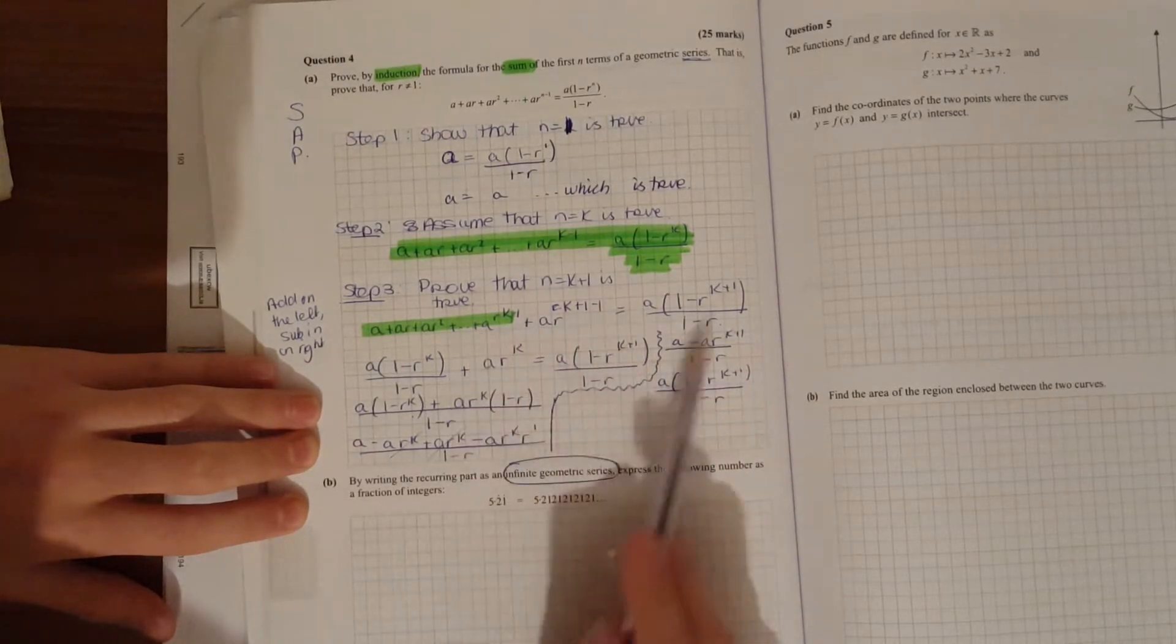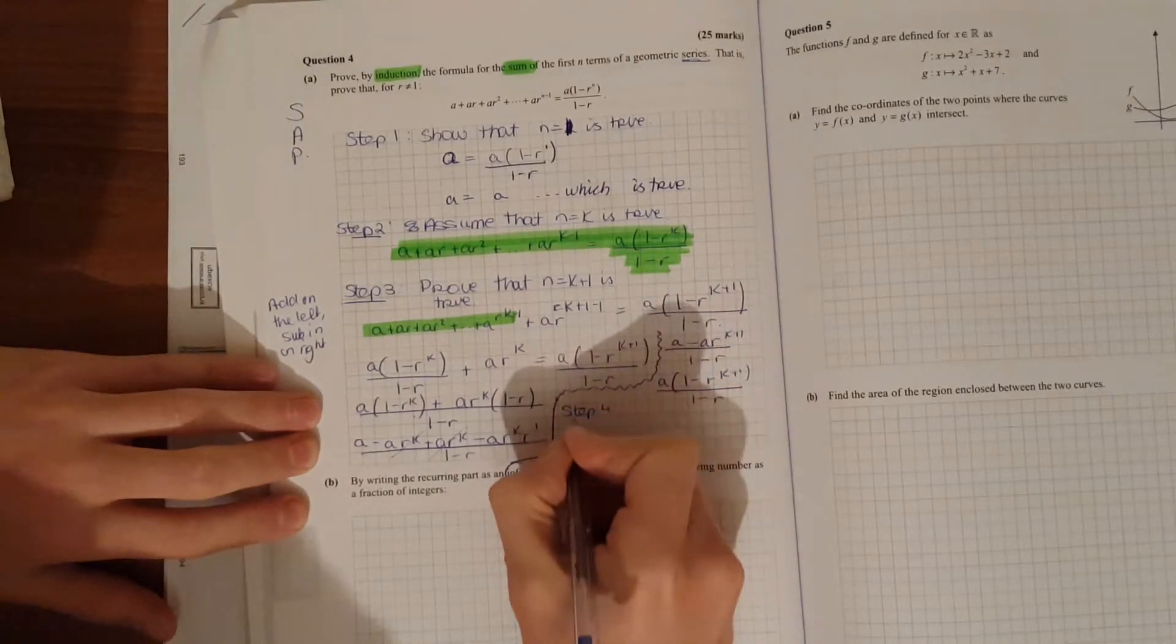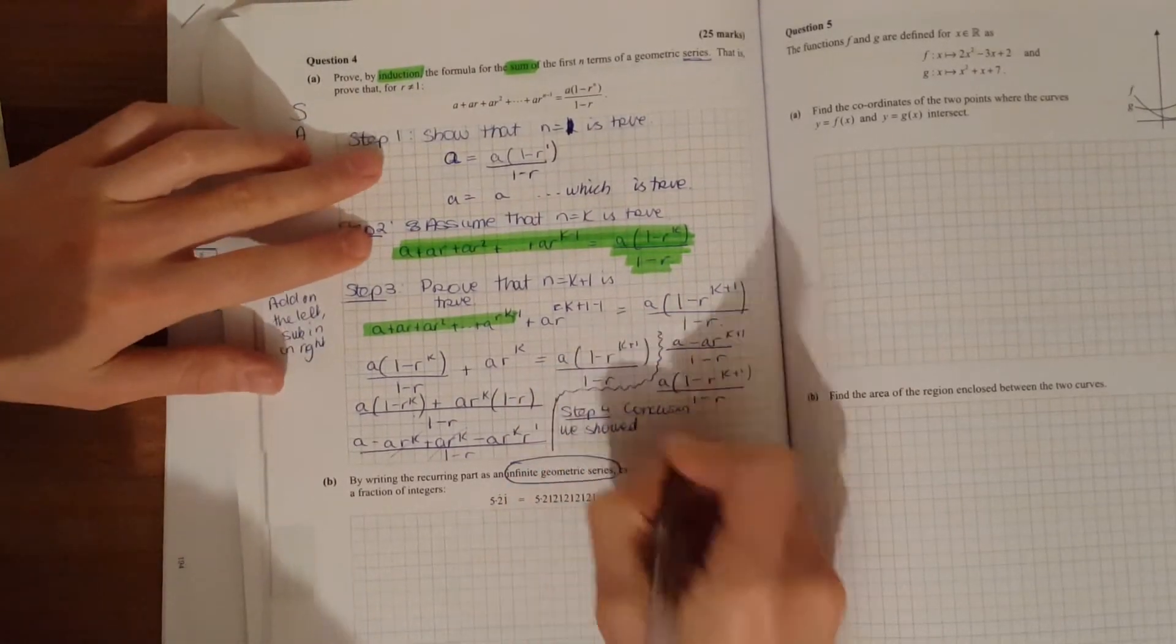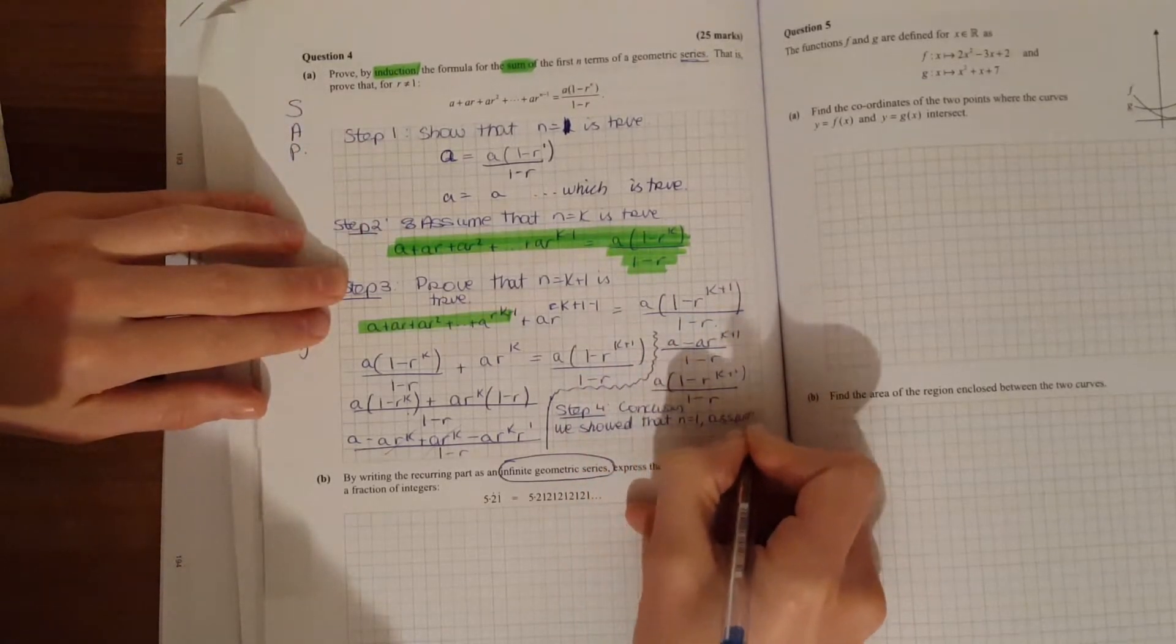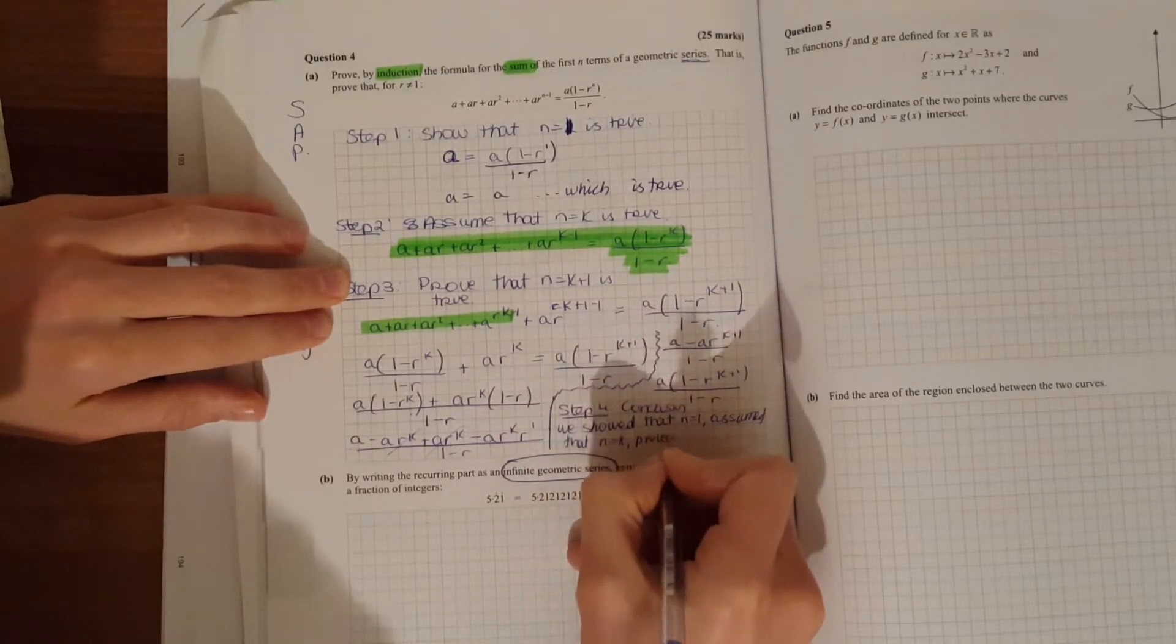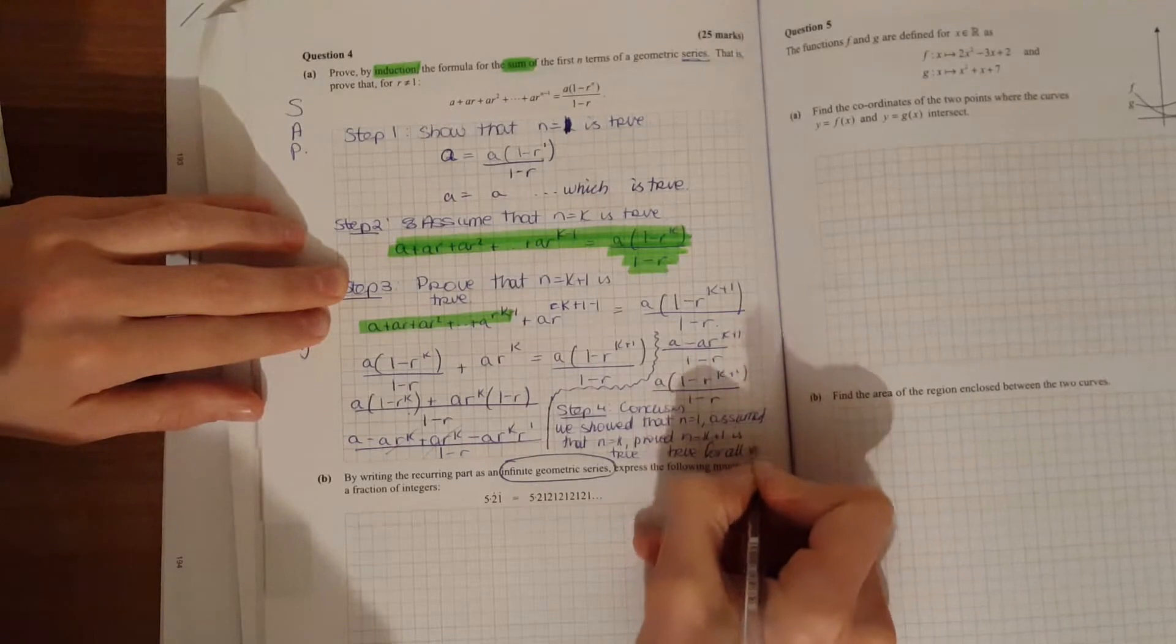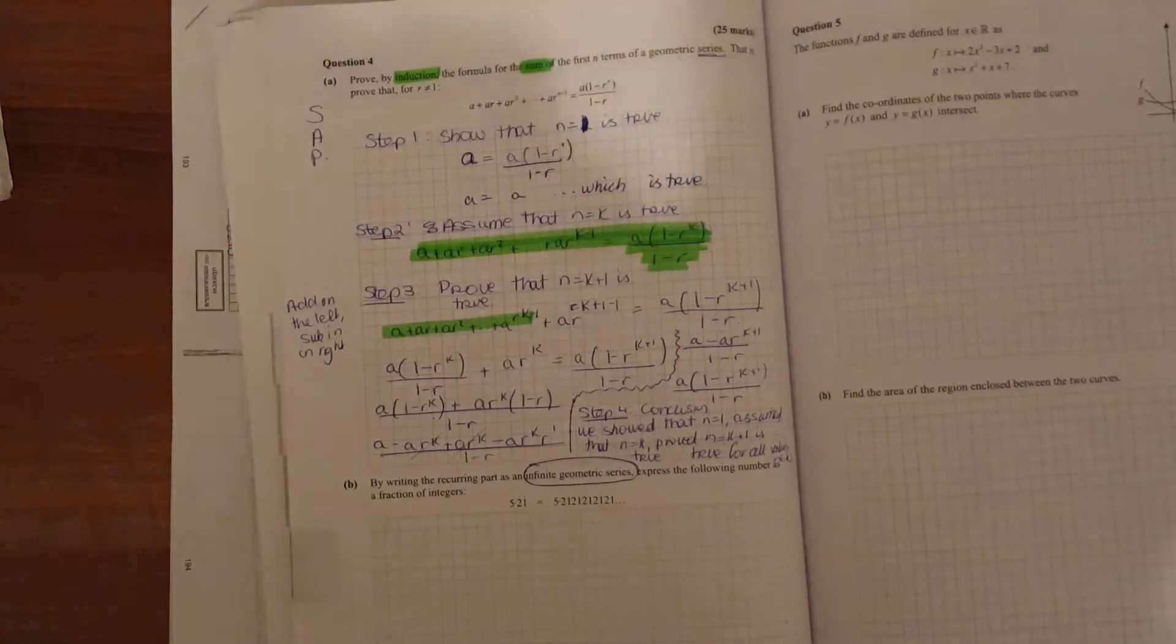We've shown that the left hand side is equal to the right hand side. And then just give your conclusion. Step 4: Conclusion. We showed, going through each of these steps, showed that n equals 1 is true, assumed that n equals K is true, and proved n equals K plus 1 is true. Therefore true for all values. N is an element of natural numbers. And that's it.